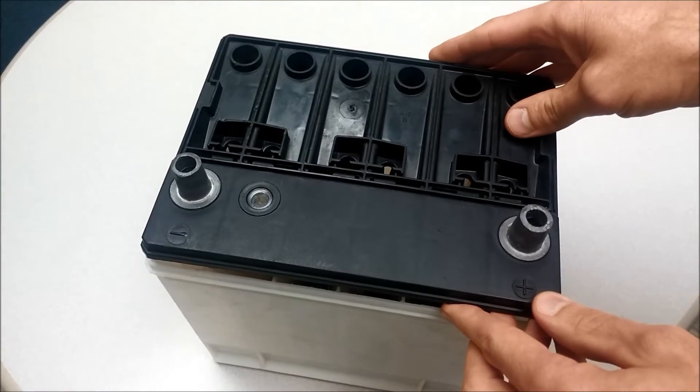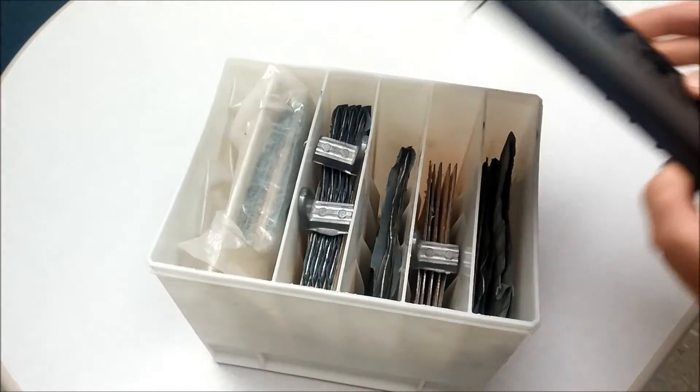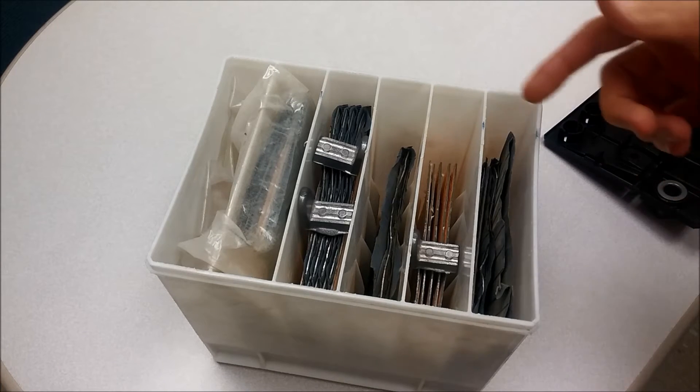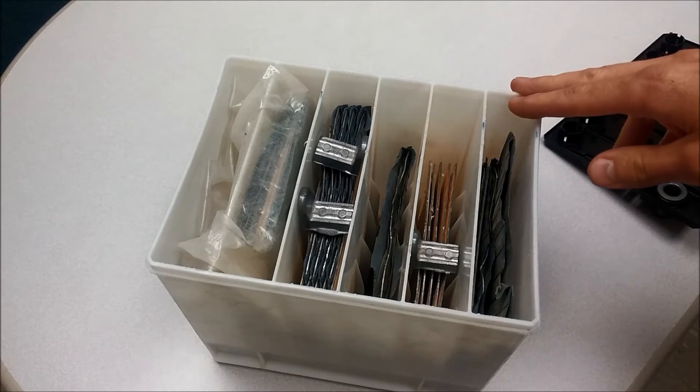A car battery typically produces 12.6 volts when it's fully charged. Each of these individual cells inside produce 2.1 volts. You multiply that by six and you get 12.6.